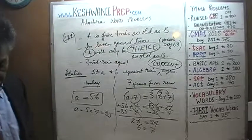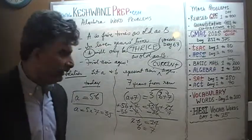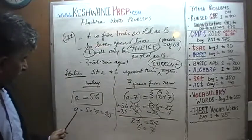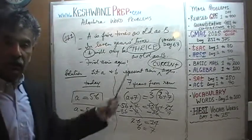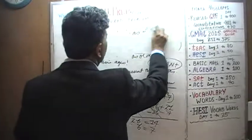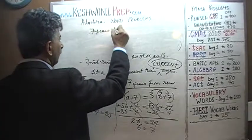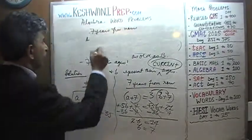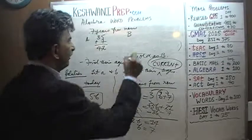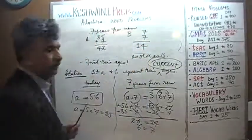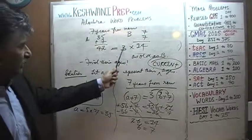Are we done? Not quite — we have to verify our answer. We're claiming A is 35 and B is 7 today. Seven years from now, A will be 42 and B will be 14. Is 14 times 3 equal to 42? The answer is yes — 14 times 3 does equal 42. It works. Seven years from now, A will be thrice as old as B.